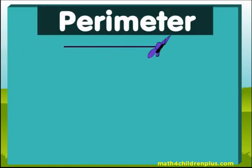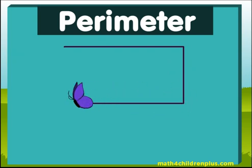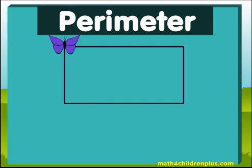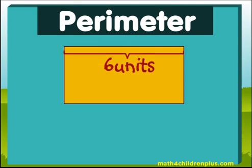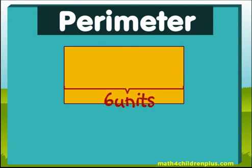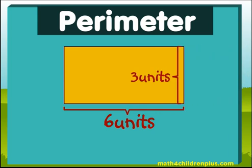All you do is make your shape or find your shape. Look at the beautiful butterfly and make a rectangle. The parameter is the distance around the shape. As you can see,